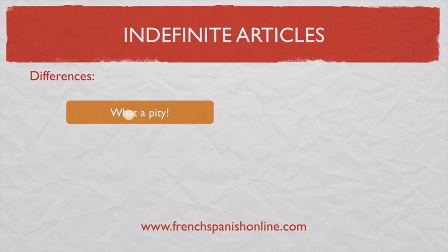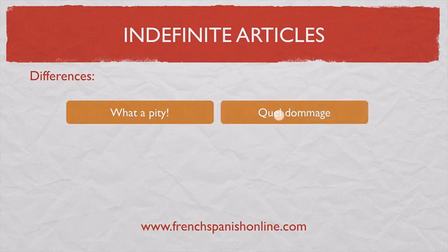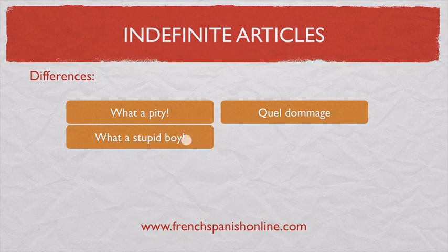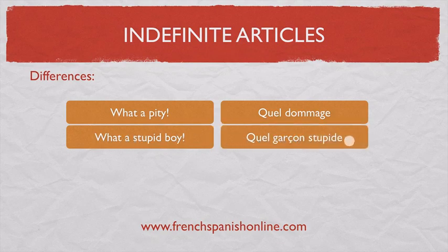Expressions like 'what a' — 'what a pity' — in English require the indefinite article. In French, nothing: 'Quel dommage.' Similarly, 'What a stupid boy' uses 'a' in English, but in French it's 'Quel garçon stupide' — no indefinite article to translate such expressions.